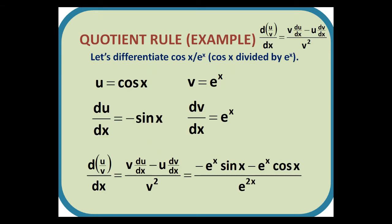Let's differentiate cos x over e to the x. u is cos x and du by dx equals minus sin x. v equals e to the x, as does dv by dx. Substituting in the formula gives us a final answer of minus e to the x sin x minus e to the x cos x, all divided by e to the 2x.